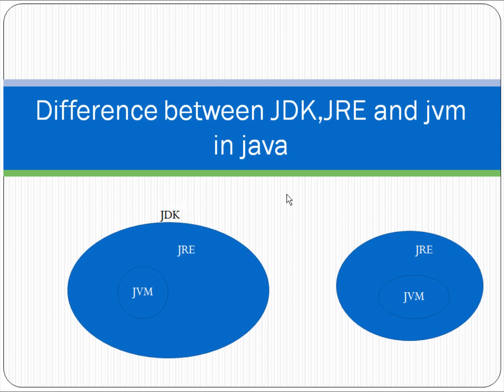From the first figure, when we install JDK, JRE is also installed automatically. So when we install JDK, we can develop, compile, and execute Java programs.